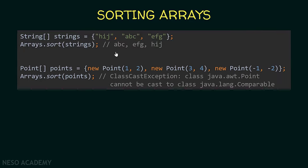Now what if we try to sort an array of points? We have an array of points called 'points' containing three points. I'm using the sort method to sort this array. In this case, we will get an exception — a ClassCastException — saying that the class Point cannot be cast to the class Comparable.